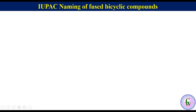For better understanding, let's go through the examples. Compound 1. Numbering will start from the bridgehead. Both the bridgeheads are equivalent, so one of the two bridgeheads will get number one. Let's give number one to the upper bridgehead.